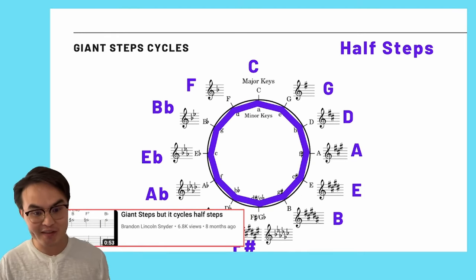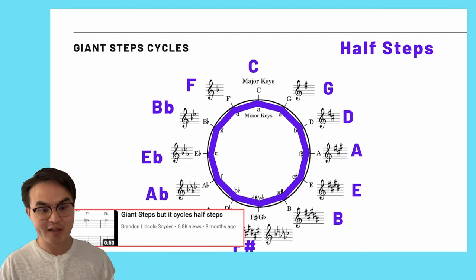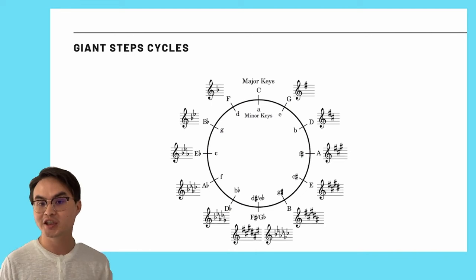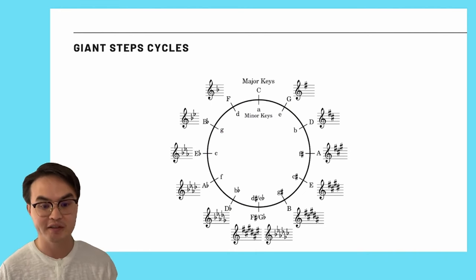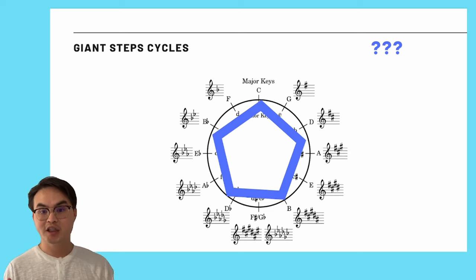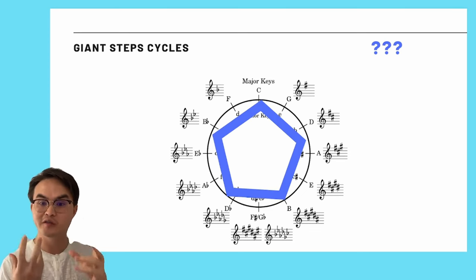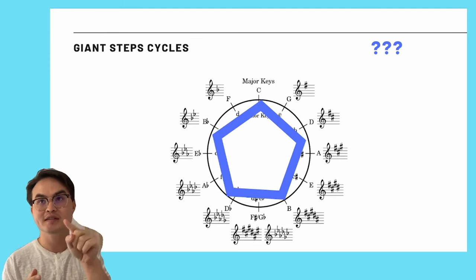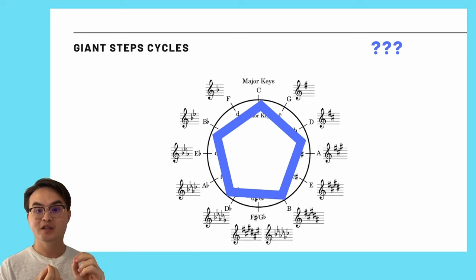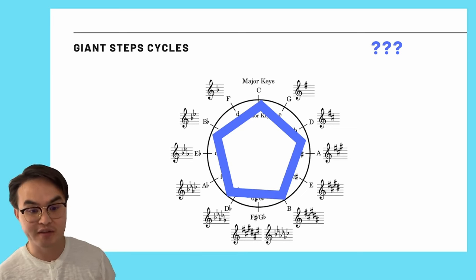But what's interesting and what I kind of came upon later is that you don't just need to do normal chromatic variations of this approach to Giant Steps. You can take any shape, maybe a shape that doesn't fit into our 12-tone chromatic scale, that is a shape with a number of sides where that number doesn't equally divide into 12, you can apply that to this Giant Steps concept.